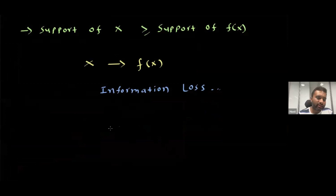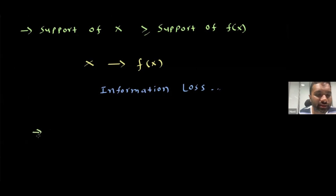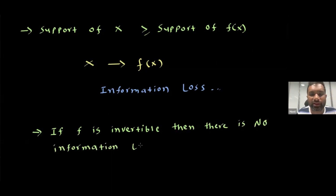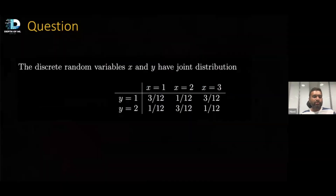If both supports are equal, then f is invertible. If f is invertible, there is no information loss. When we say information loss, what we mean is that in terms of knowing the probabilities, we have reduced the space we are working in — we know less in terms of probability values in a reduced domain. So let's solve a question: you are given certain discrete random variables X and Y with a certain joint distribution.